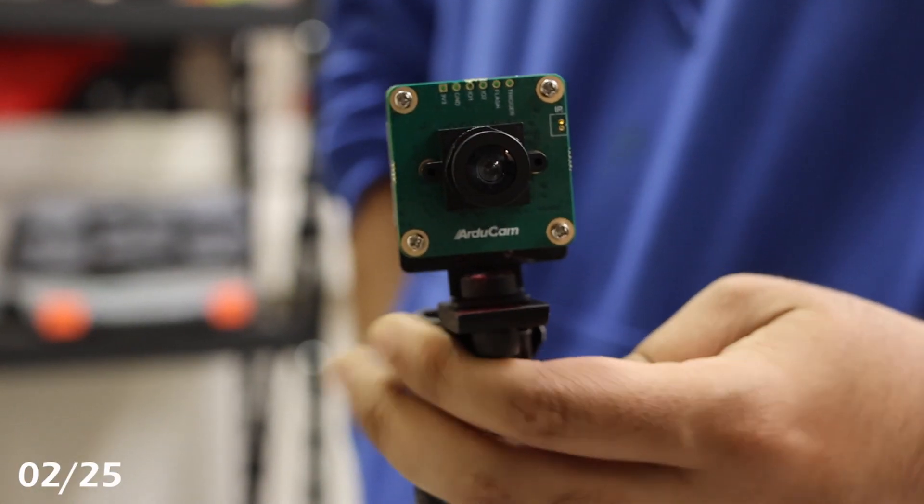Two cameras on the mast and arm, along with a Z2 camera located on the front of the rover, provide visual feedback during operation.